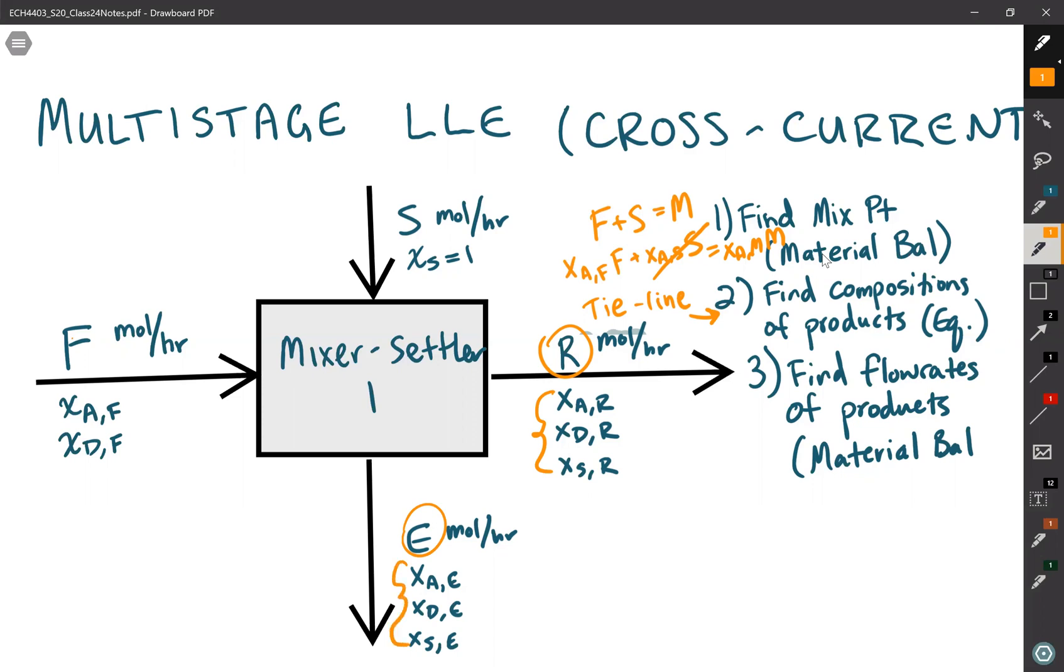The final step is to find the flow rates of the products, finding the flow rate of R and E. In order to do that, you can use the mixing point again. You could say M is equal to E plus R. And then you could also use one of the component material balances. For instance, you could say XA at the mixing point times the mixing point equals XA of the extract phase times the extract flow rate plus XA of the raffinate times the raffinate flow rate. Once you solve those two equations for two unknowns, you have then solved for each of the eight unknowns that are in this process flow diagram.